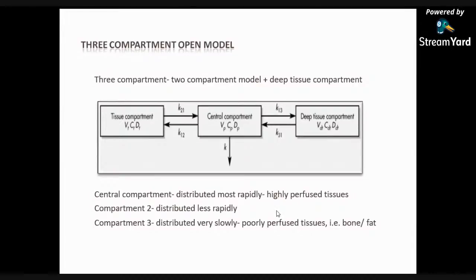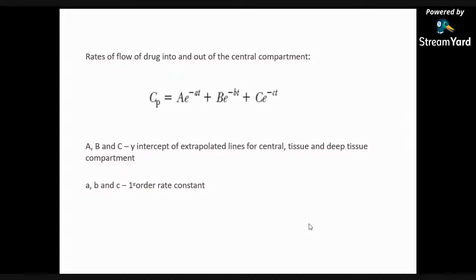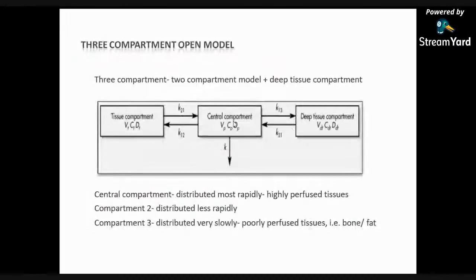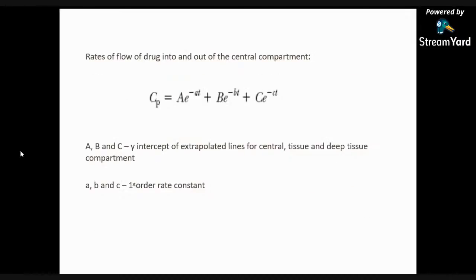The third compartment consists of poorly perfused organs like bone and fat, which distribute drug very slowly. The rate of flow of drug into and out of the central compartment follows a triexponential equation: Cp = Ae^(-αt) + Be^(-βt) + Ce^(-γt), where A, B, and C are the y-intercepts of the extrapolated lines of the central, tissue, and deep tissue compartments respectively, and α, β, and γ are the first-order rate constants.